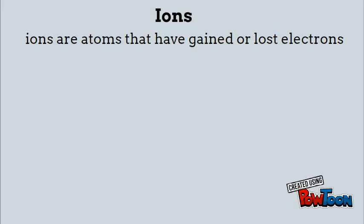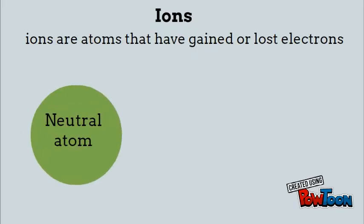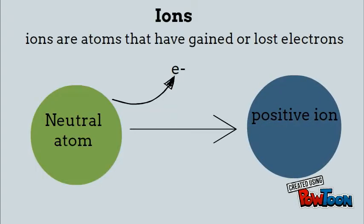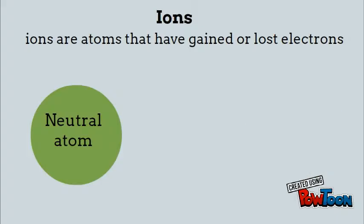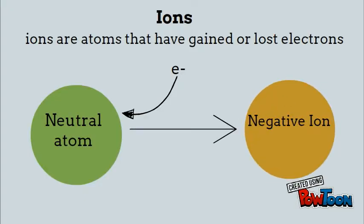If we look at ions, ions are atoms that have either gained or lost electrons. So if we were to take a neutral atom and remove a negative electron, we have an overall positive charge and we have a positive ion — we call positive ions cations. If we were to take that same neutral atom and give it a negative electron, now we have an overall negative charge and we have a negative ion — we call negative ions anions. It's basically just the difference between the negative electrons and the positive protons that gives us our overall charge.